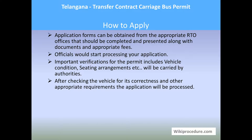Application forms can also be obtained directly on your visit to the RTO office. Fill the form, attach all documents, and present it to the officer there. The officer will notify you of the amount and the counter where you need to pay. Submit the application form along with the prescribed fees. Important verification — including vehicle condition, seating arrangement, and the legality of the legal heir — will be carried out before the transfer of contract carriage bus permit is issued.